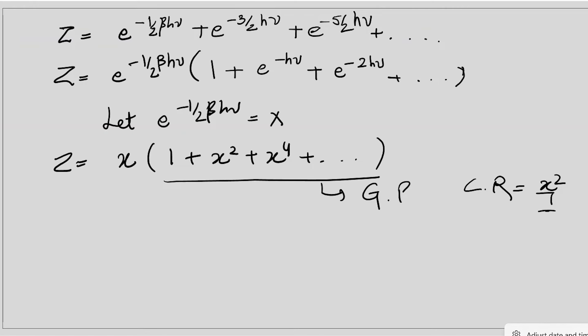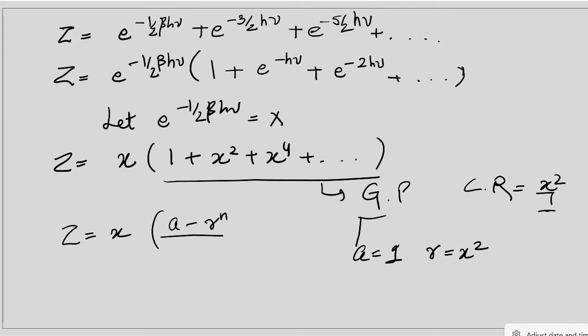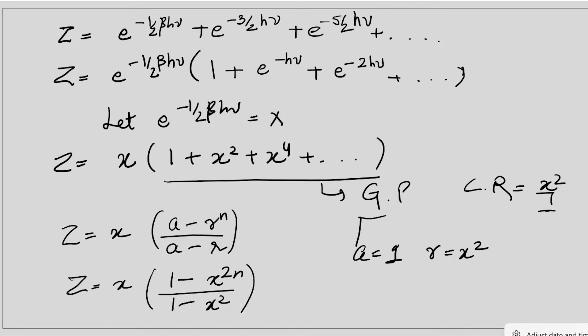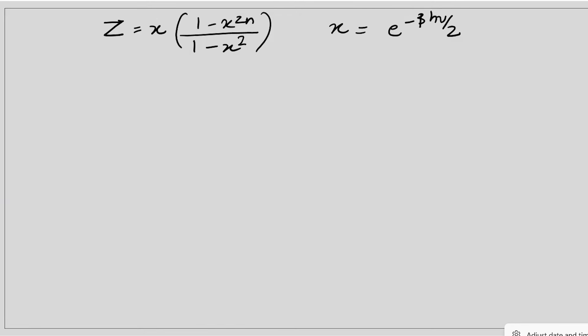We know the summation of a geometric progression equals a over 1 minus r. In this geometric progression, the first term a equals 1 and the common ratio r equals x-squared. Applying the formula, we get the simplified expression for the partition function as a over 1 minus r, which gives us 1 over 1 minus x-squared.